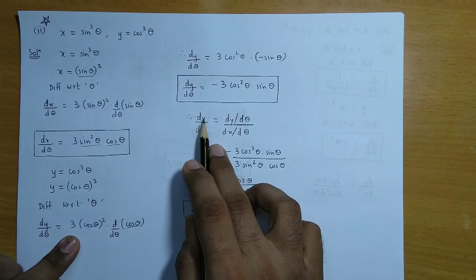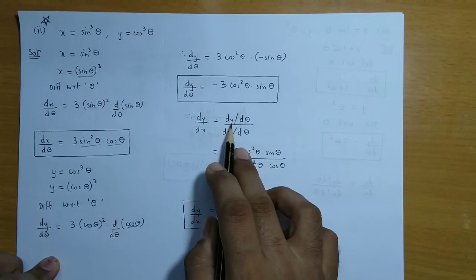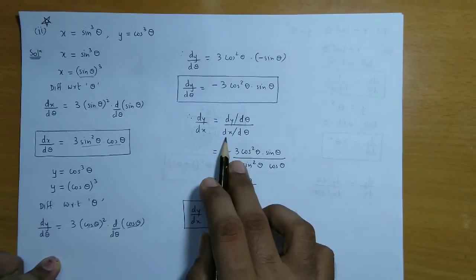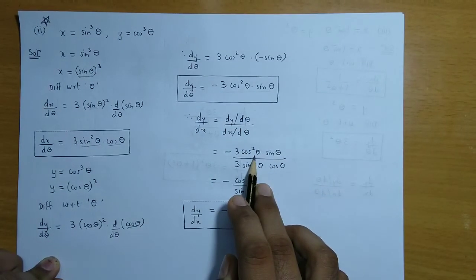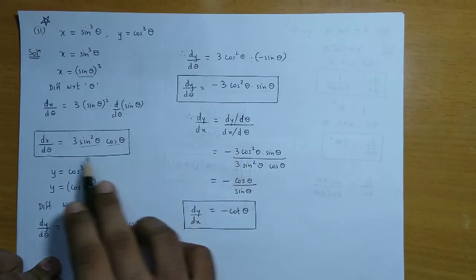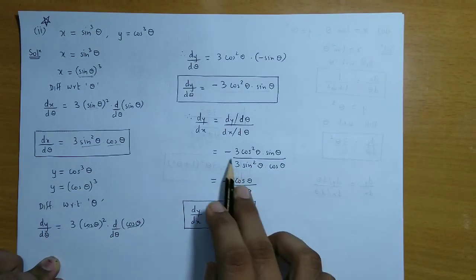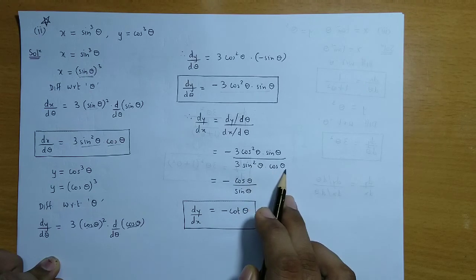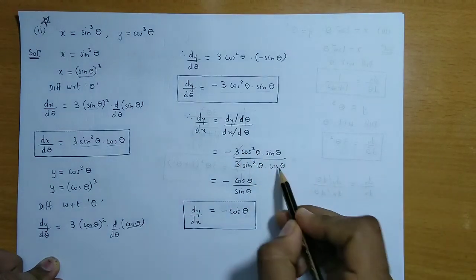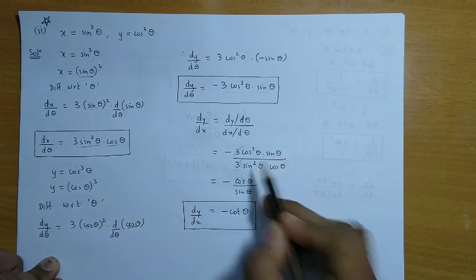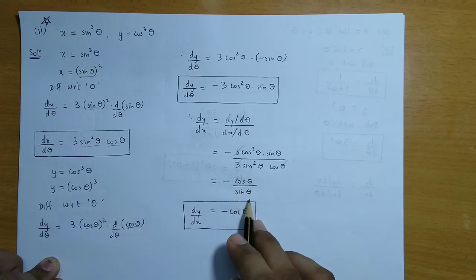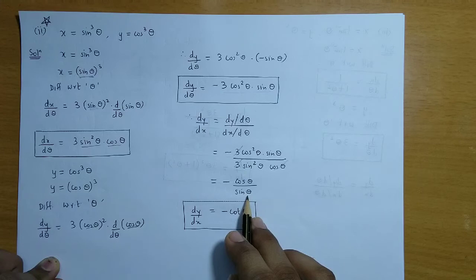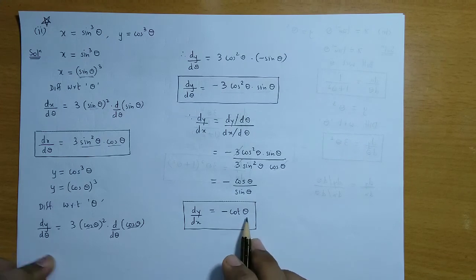Therefore dy/dx = (dy/dθ) ÷ (dx/dθ). Substituting: dy/dθ = −3cos²θ · sinθ and dx/dθ = 3sin²θ · cosθ. After cancellation we are left with −cosθ/sinθ, so dy/dx = −cotθ.